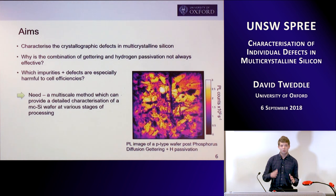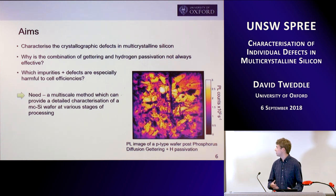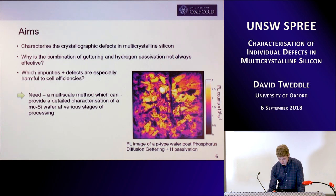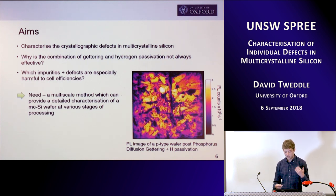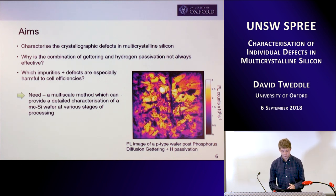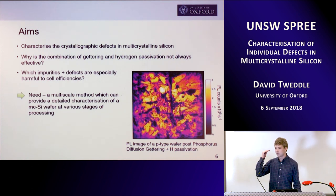So what are my aims? I want to characterize these defects when they've been through the various stages of solar cell manufacture. Why is the combination of gettering and hydrogen passivation not always effective? Here is one of your standard PL images with recombination active regions after phosphorus diffusion and hydrogen passivation — we're still getting these dark regions. Why has that region not responded while other regions have very high lifetimes? And are there impurities and defects that are especially harmful to cell efficiencies? In order to do this, we need a multi-scale method from the macro scale down to the nano and atomic scale.